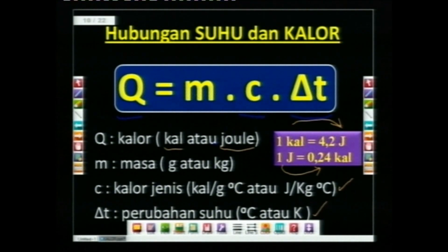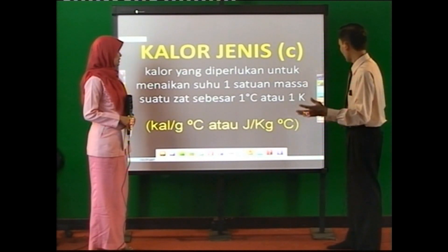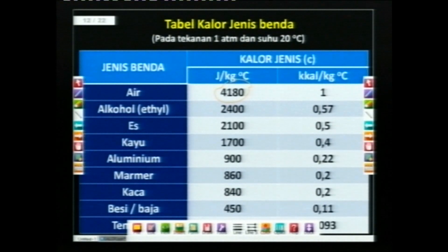Ada kalor jenis di sini. Apa kalor jenis ini? Kalor jenis adalah kalor yang diperlukan untuk menaikkan suhu satu-satuan masa suatu zat sebesar satu derajat Celcius atau satu kelvin. Satuannya dalam kalori per gram derajat Celcius, atau joule per kilogram derajat Celcius. Dari tabel, misalnya air memiliki kalor jenis 4.180 joule per kilogram derajat Celcius. Artinya untuk menaikkan satu derajat Celcius dari satu kilogram air diperlukan kalor sebanyak 4.180 joule.